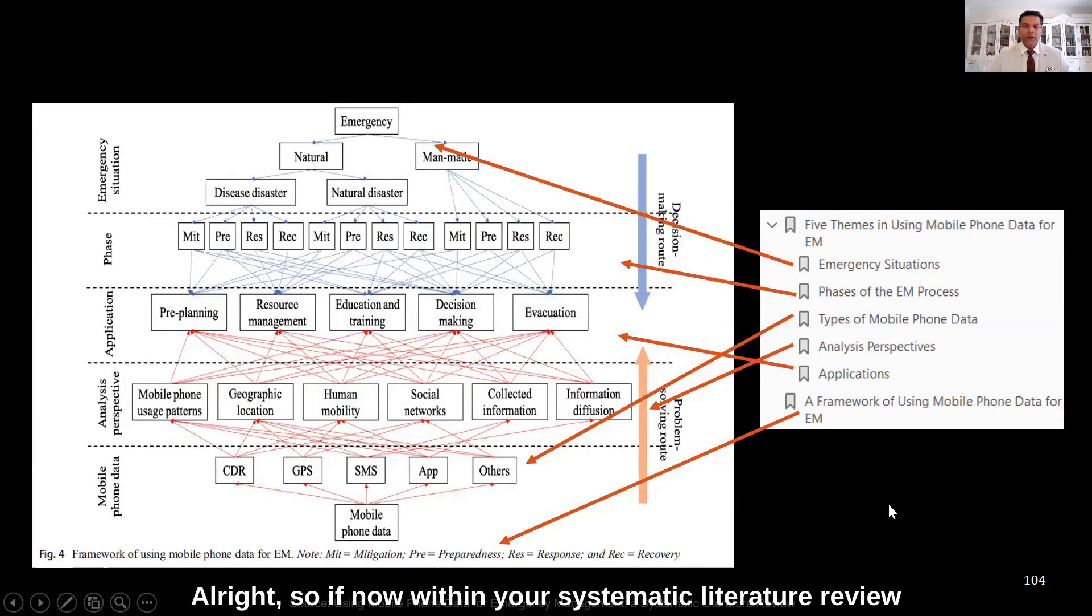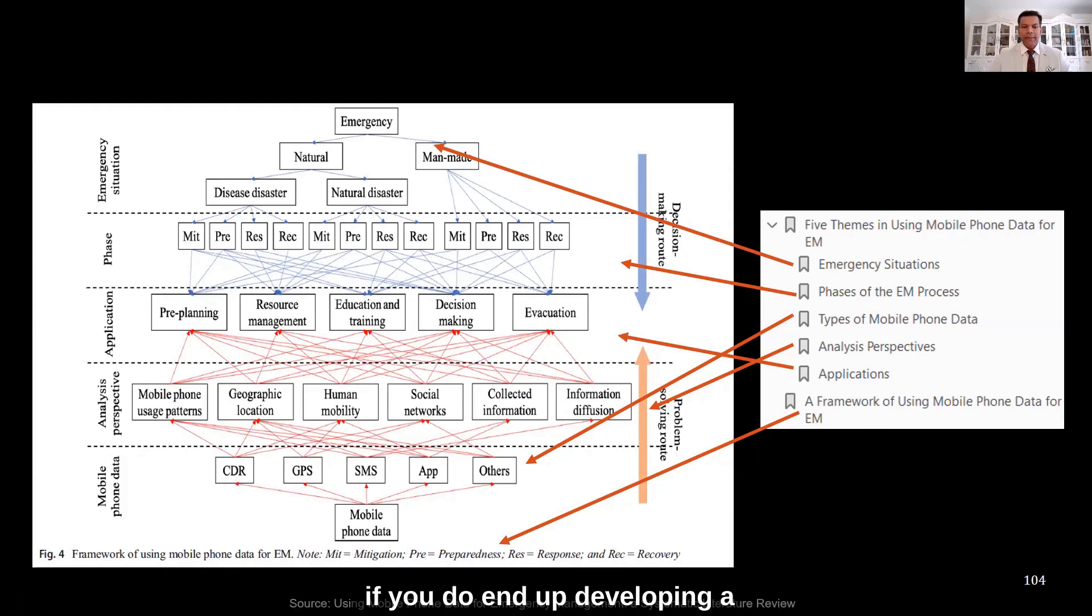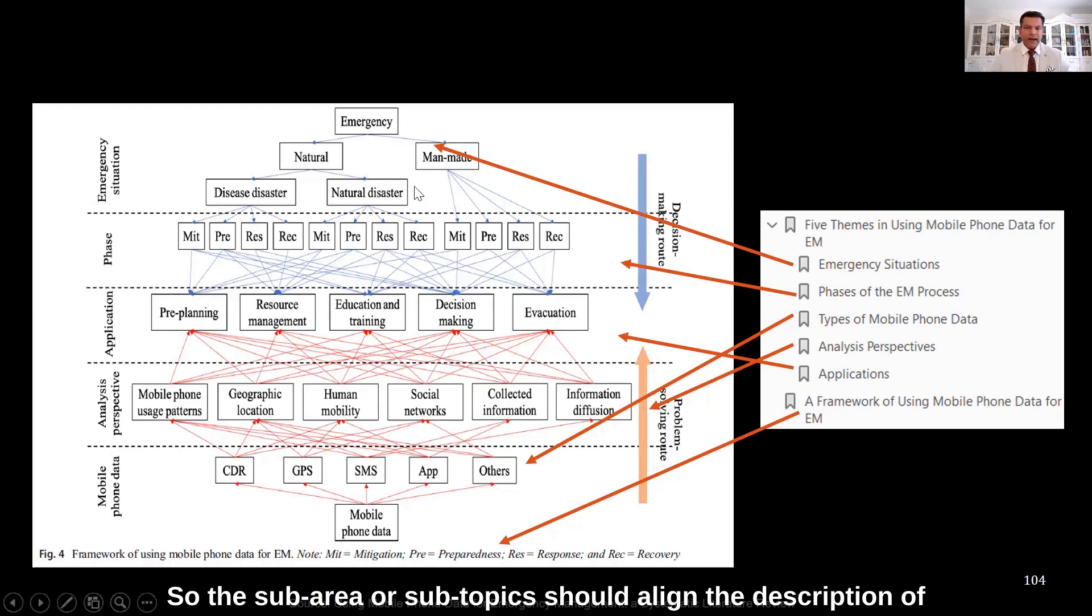Alright, so if now within your systematic literature review, if you do end up developing a conceptual framework or architecture or a model, the write-up of that model also has to have the same level of alignment or connection. So the sub-areas, sub-topics should align. The description of the sub-topics should align.